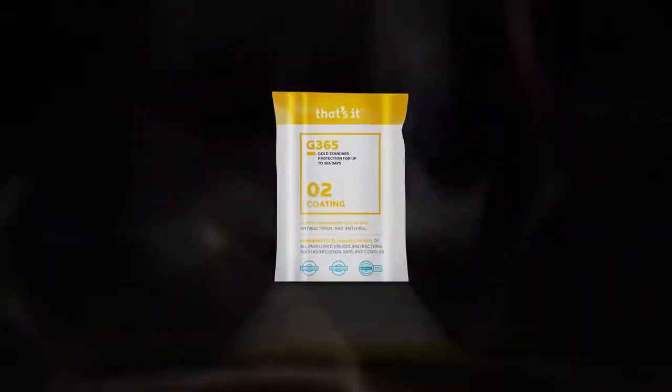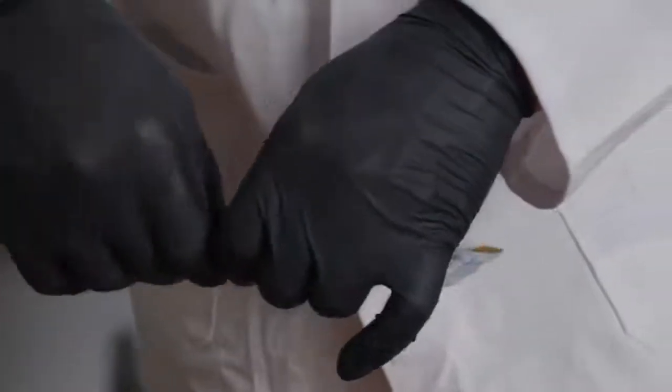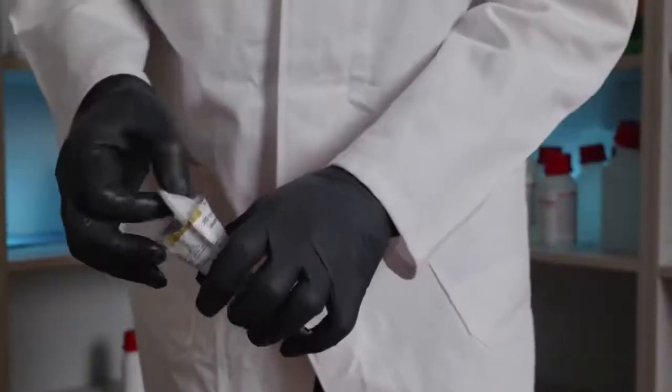In the next step you apply the That's It Gold coating. This is quite simple. Tear open the That's It packaging and take out the That's It Gold cloth.